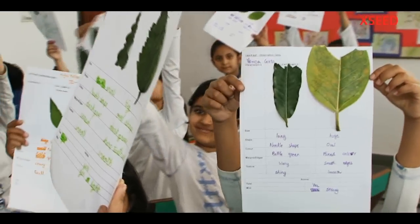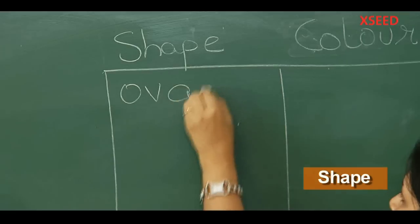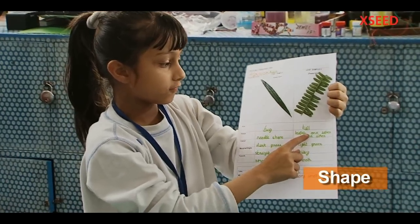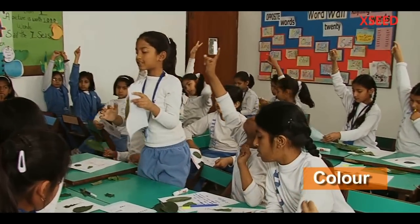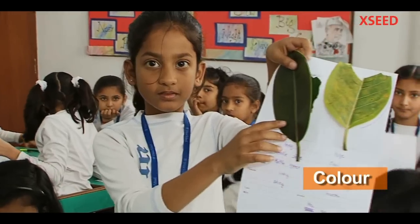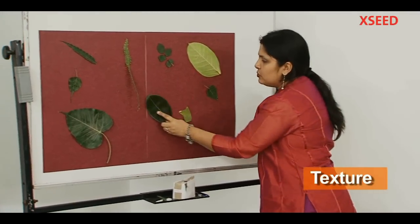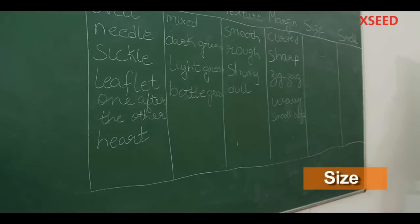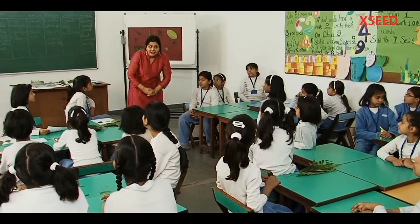Everybody completed? Yes ma'am. Can anybody tell me what are the different kinds of ways you have described the leaf? Oval. Leaflets one after the other. Dark green. Light green. Bottle green. Smooth. Shiny. Rough. Curbs — so this is a rough one, and this one is smooth. Sharp teeth. Let's come to size now. Hard. Good smell. Unusual smell. Wow, that was very interesting. Was it interesting for you? Yes ma'am. More trees, more leaves.